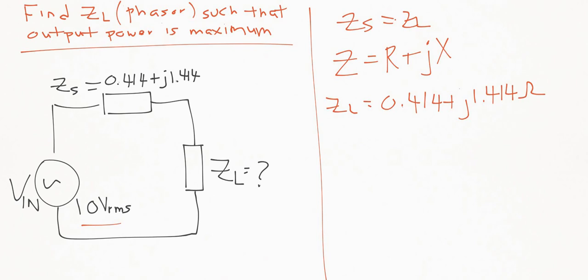And to do that, recall that in order to find the magnitude of the phasor, we need to take the vectorial sum of this. And so I'll call it M for magnitude. In order to find the magnitude, we take 0.414, we square it.